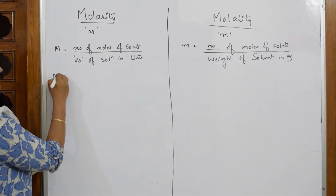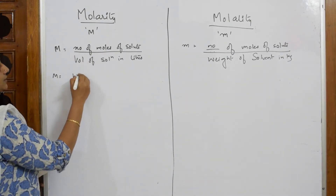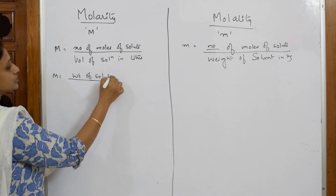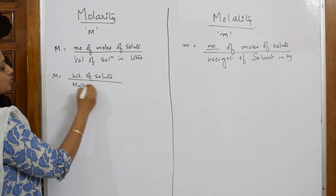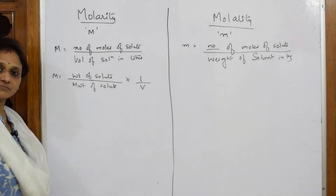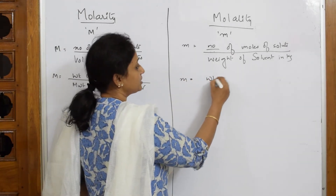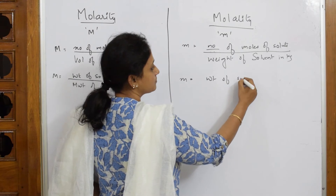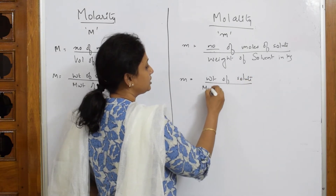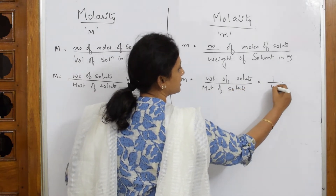Now, what is number of moles? Number of moles is nothing but weight divided by molecular weight. So for molarity, we write: weight of solute divided by molecular weight of solute, into 1 over V. For molality, it is weight of solute divided by molecular weight of solute, into 1 over W (weight of solvent).